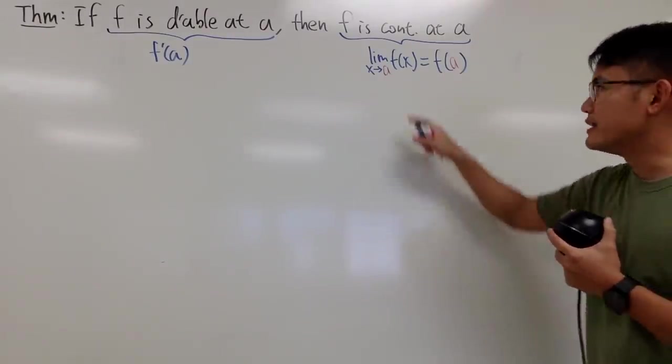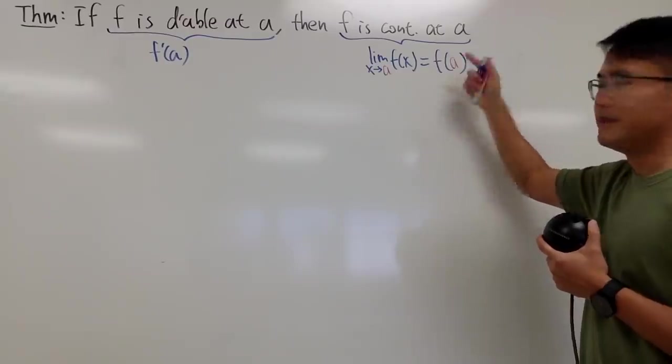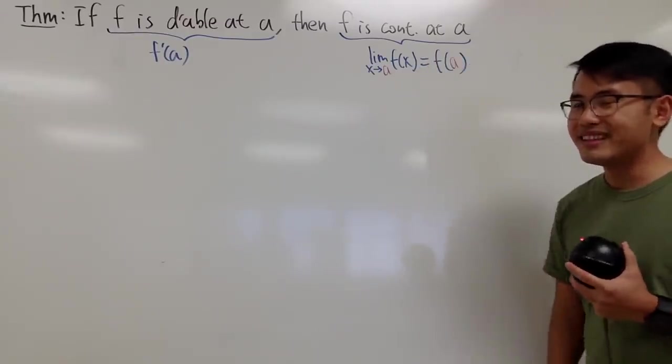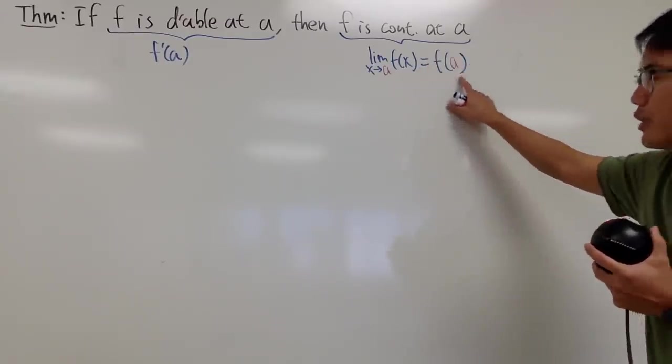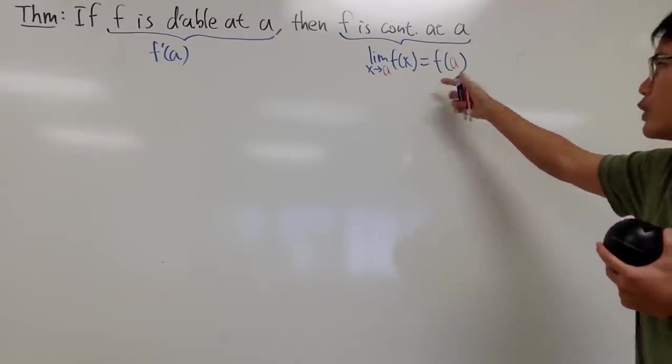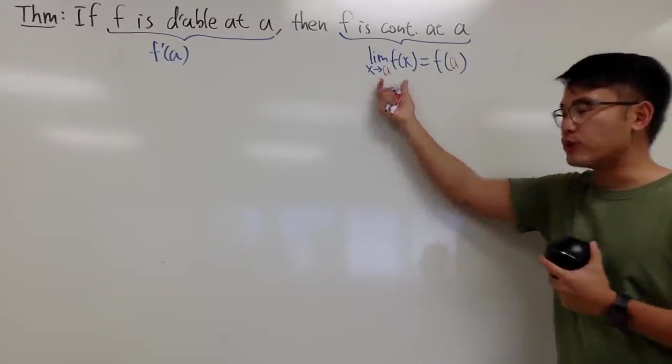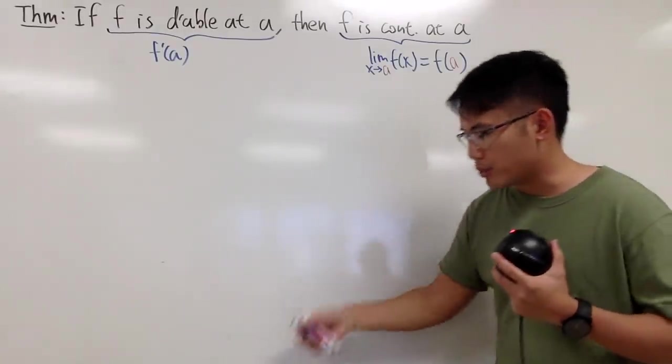In other words, you can simply plug in a into x, and you get the limit value. So that's pretty much it. But anyway, this is what we're trying to show. And usually, we'll start from the left-hand side, and then try to show the right-hand side. If we can achieve that, we'll be done for the proof.